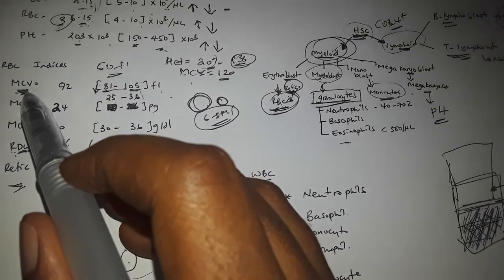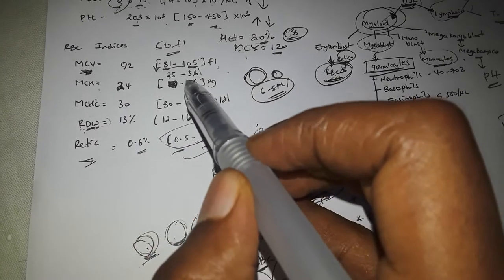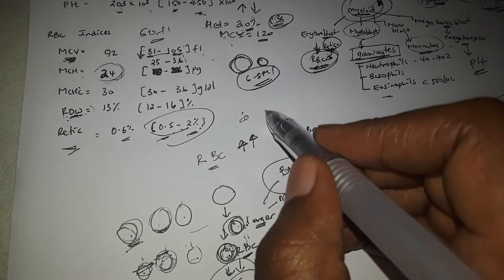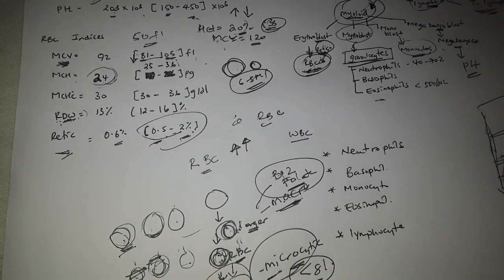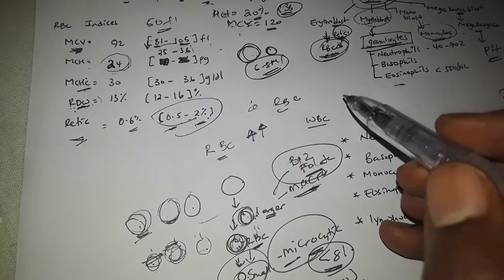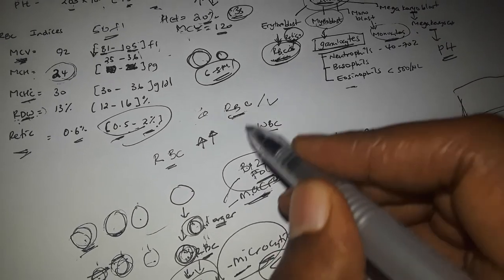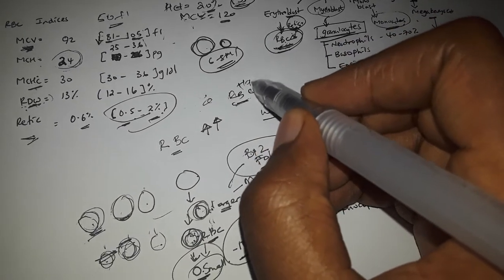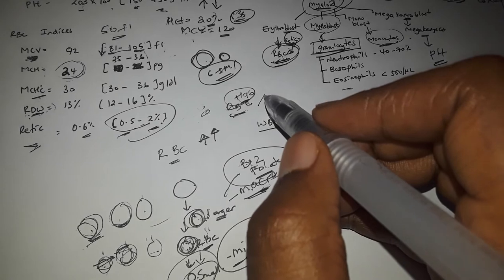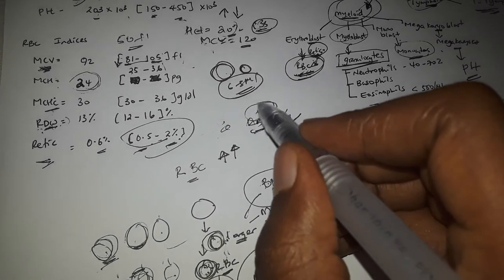We also use MCH, which reflects the hemoglobin content per red cell. MCHC stands for Mean Corpuscular Hemoglobin Concentration — it is the hemoglobin concentration in terms of volume, giving us a measure of how much hemoglobin is present relative to cell size.